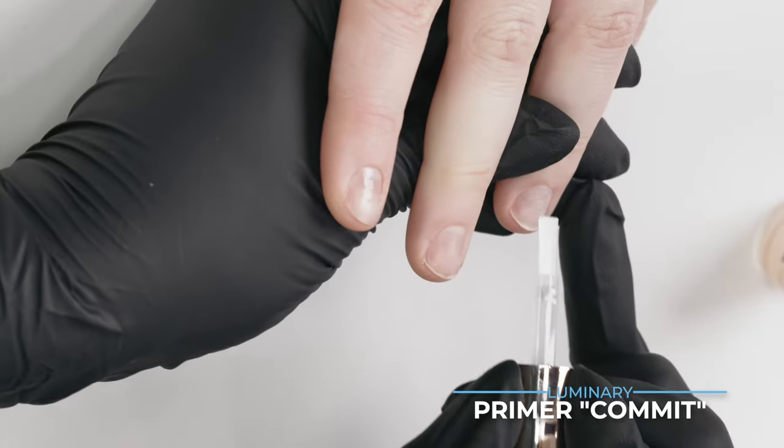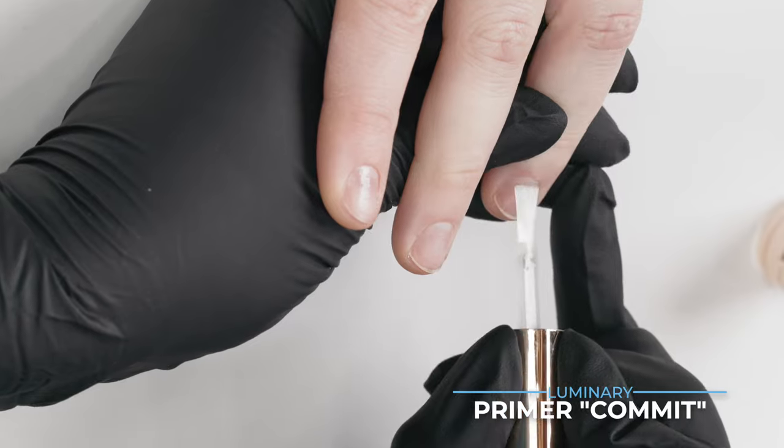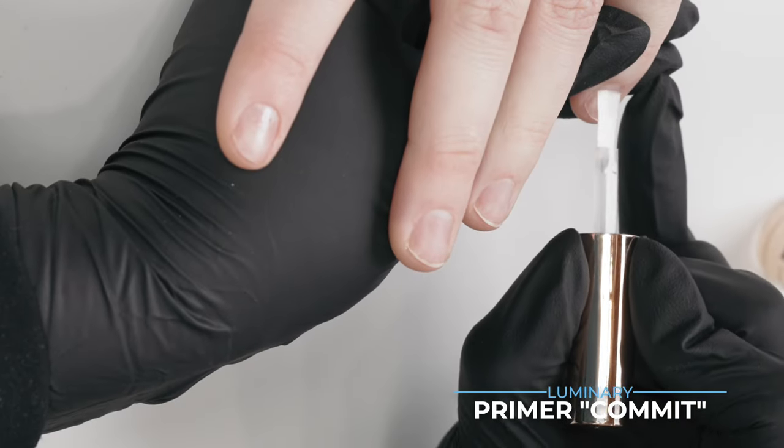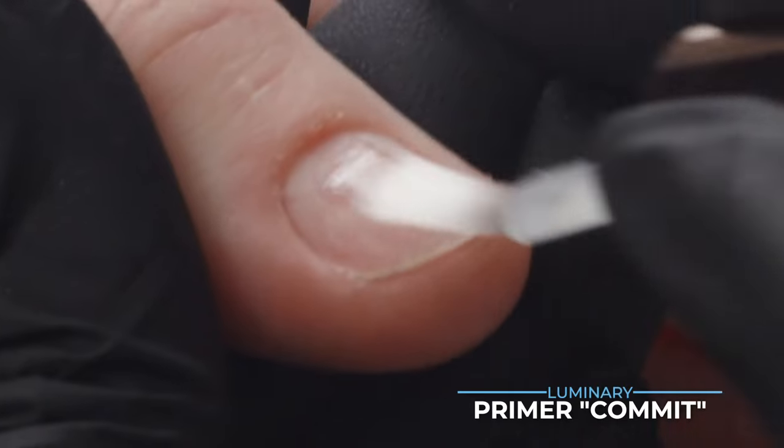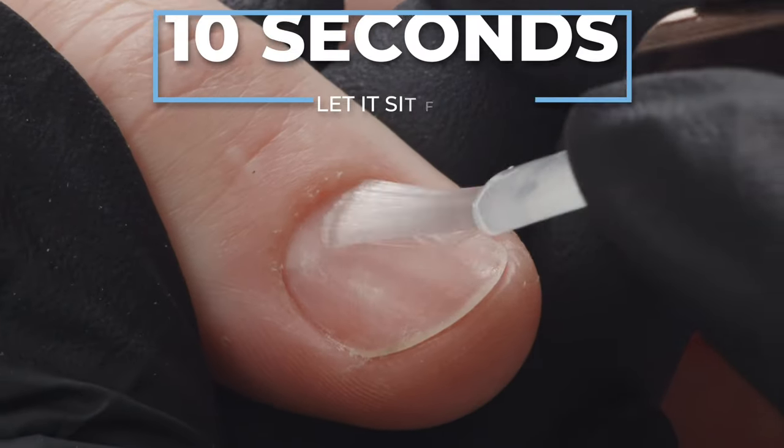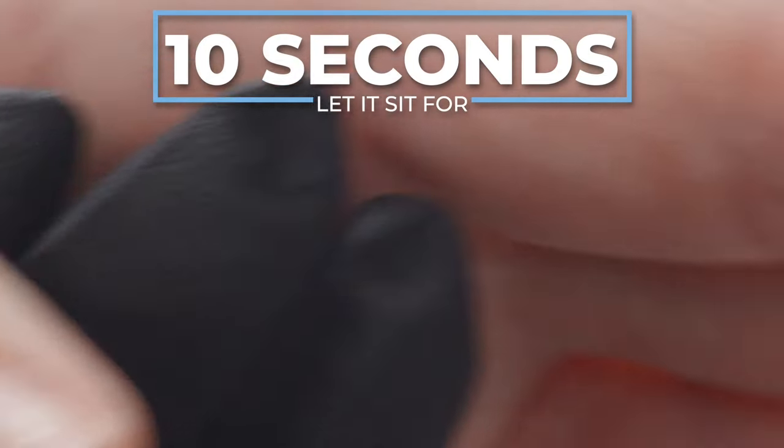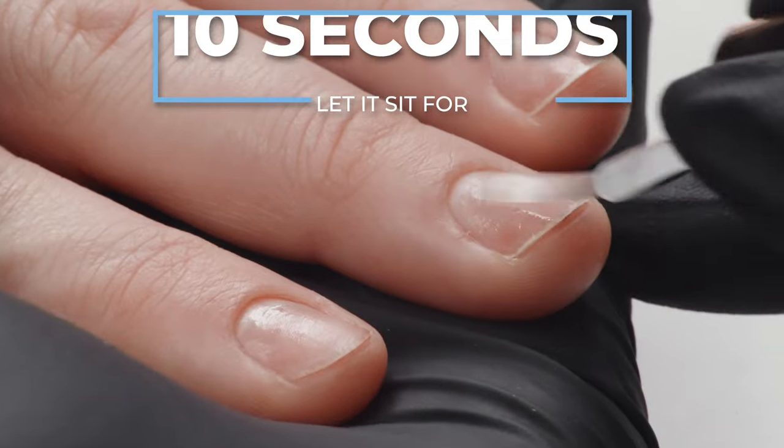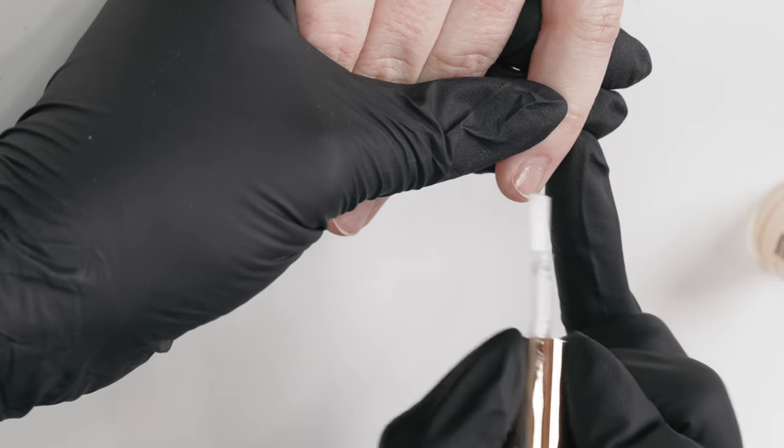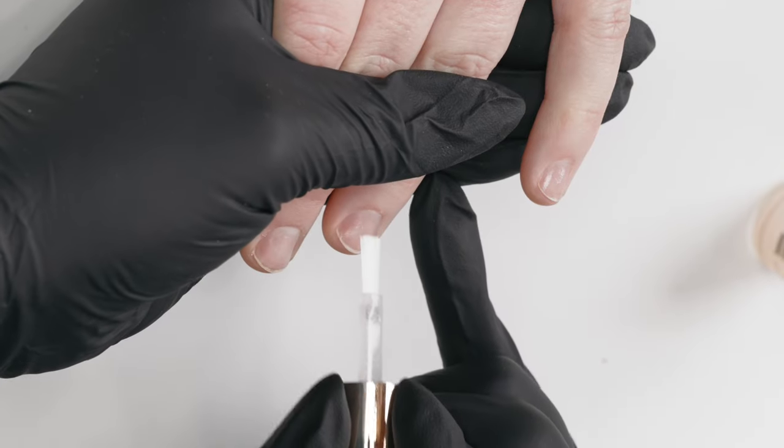You're going to put a thin coat on every single nail. Make sure you avoid getting it on the skin. If you do, just wipe it off. Now you're going to want to let that sit for at least 10 seconds. You're going to look for it to actually become not shiny, but tacky. And if you have a client who has really thin nails or they're really damaged, wait 10 seconds in between and put another layer of primer on.